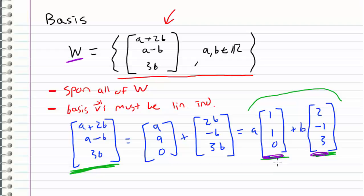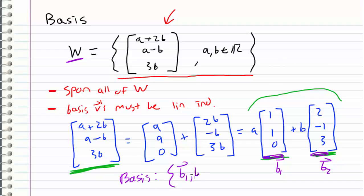I'll call these b1 = (1,1,0) and b2 = (2,−1,3). So the basis for W is the set {b1, b2}, which are the vectors (1,1,0) and (2,−1,3).